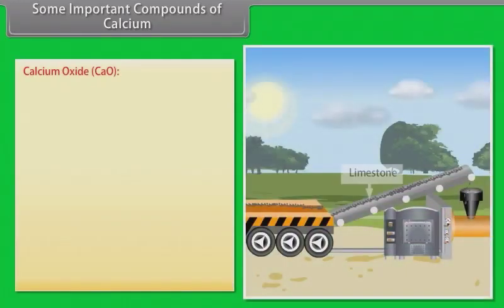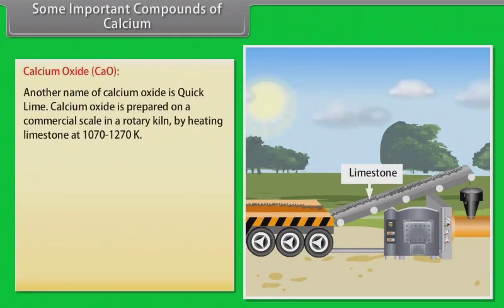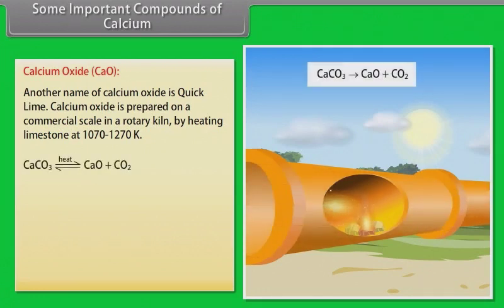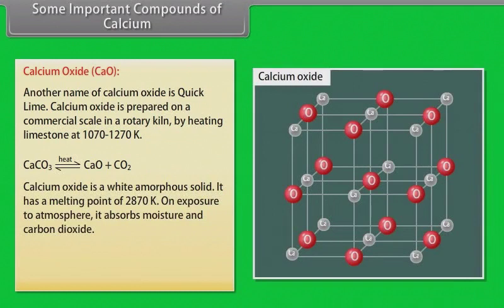Some important compounds of calcium. Calcium oxide. Another name of calcium oxide is quick lime. Calcium oxide is prepared on a commercial scale in a rotary kiln by heating limestone at 1070 to 1270 Kelvin. Calcium oxide is a white amorphous solid. It has a melting point of 2870 Kelvin. On exposure to atmosphere, it absorbs moisture and carbon dioxide.